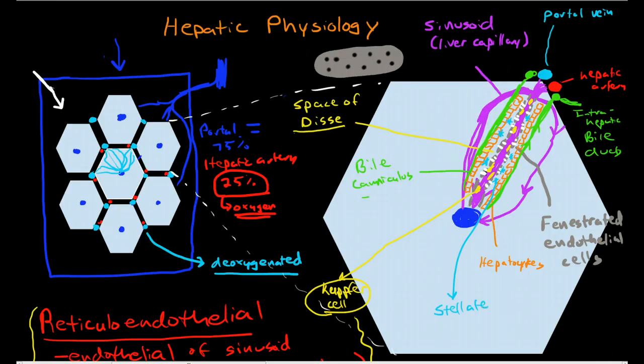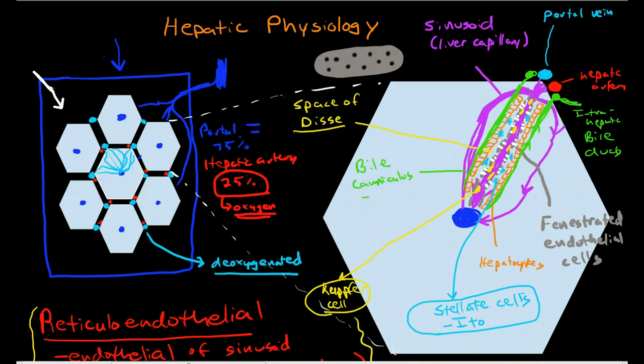So stellate cells, and one of the major functions of these cells is storage of vitamin A. However, we've also discovered that they have a very significant role in the pathogenesis of cirrhosis, because they seem to have a significant role in the inflammation of the sinusoids and the perisinusoidal space. So they're important cells to recognize and kind of know where they are.